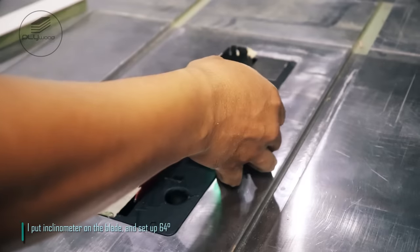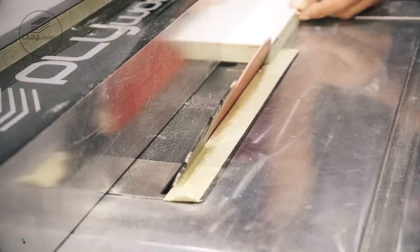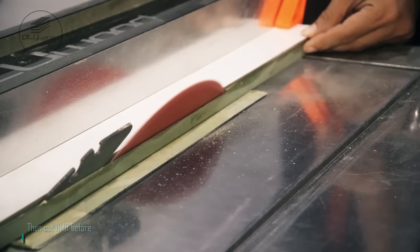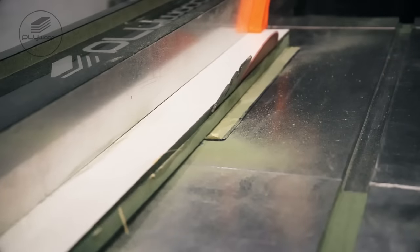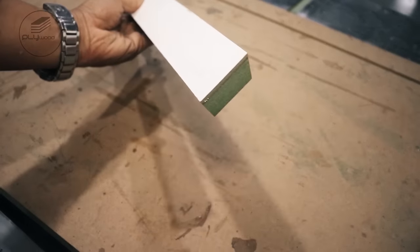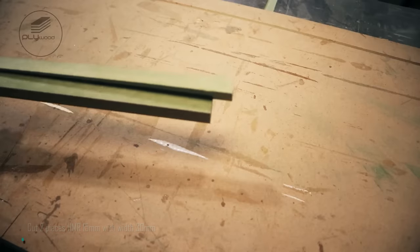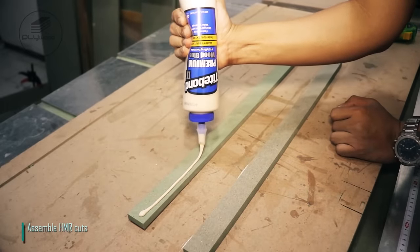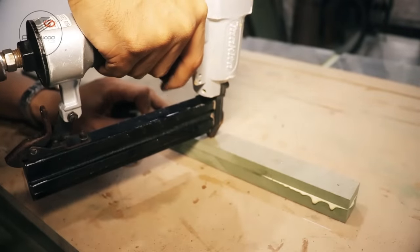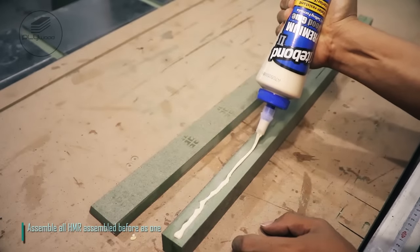I put inclinometer on the blade and set up 64 degrees. Then cut HMR before. Cut two pieces HMR 15 mm with width 30 mm. Assemble HMR cuts. Assemble all HMR assembled before as one.